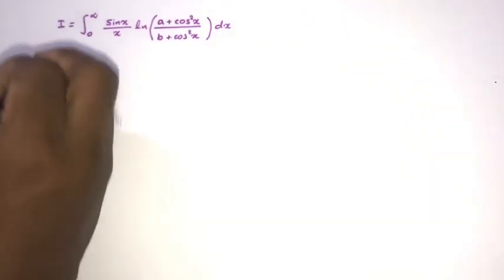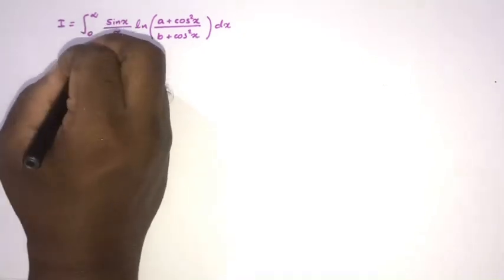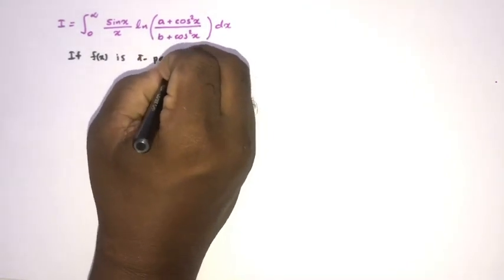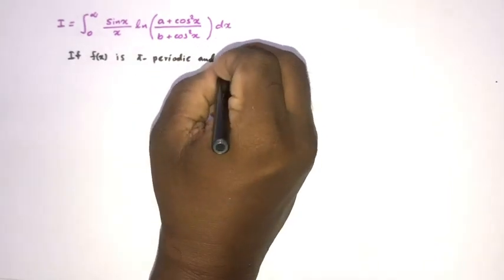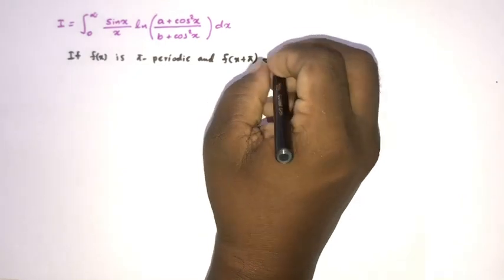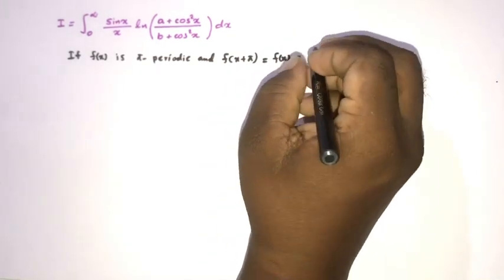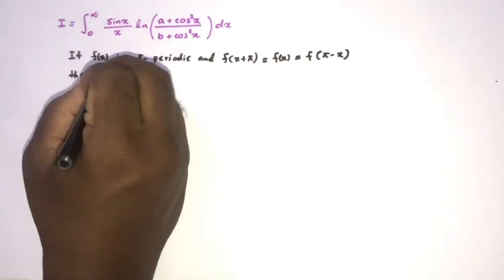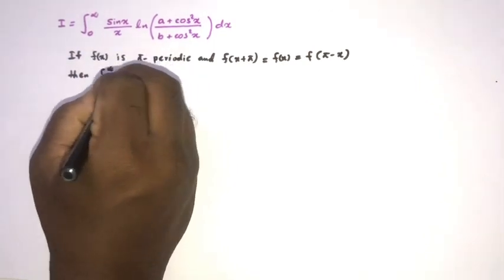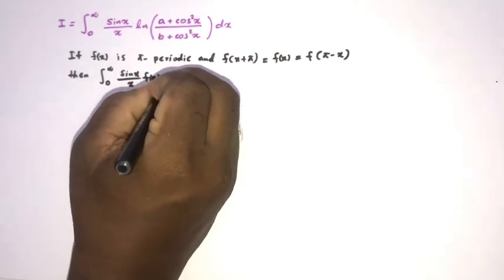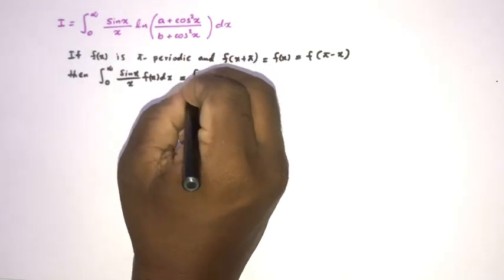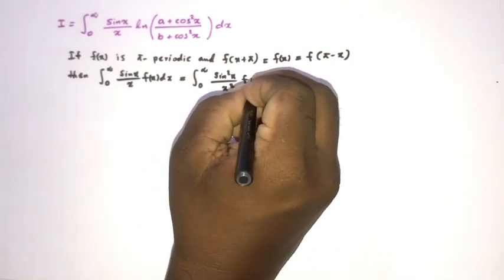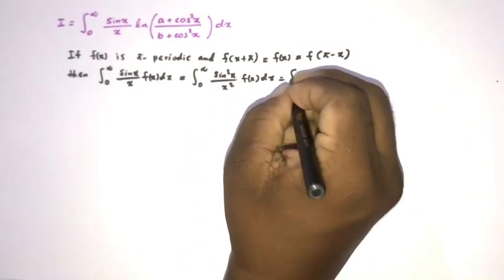So what is the Lobachevsky integral formula? If f(x) is pi-periodic and f(x + pi) = f(x) = f(pi − x), then we have the integral from zero to infinity of sine(x)/x times f(x) dx equals the integral from zero to infinity of sin²(x)/x² times f(x) dx.